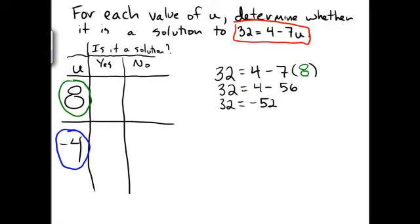Notice that this is not correct. This is an incorrect equation to say 32 equals negative 52, so we will end up checkmarking no. This is not a solution.